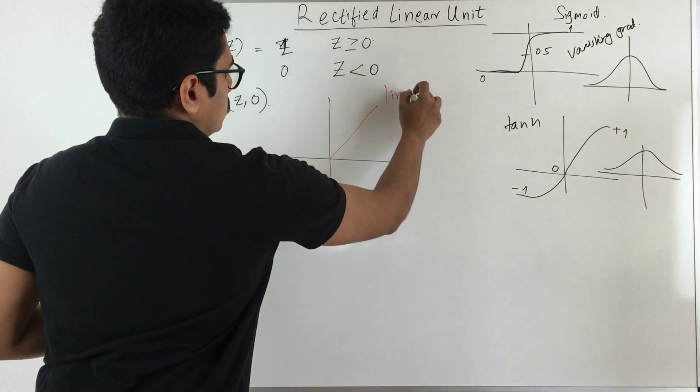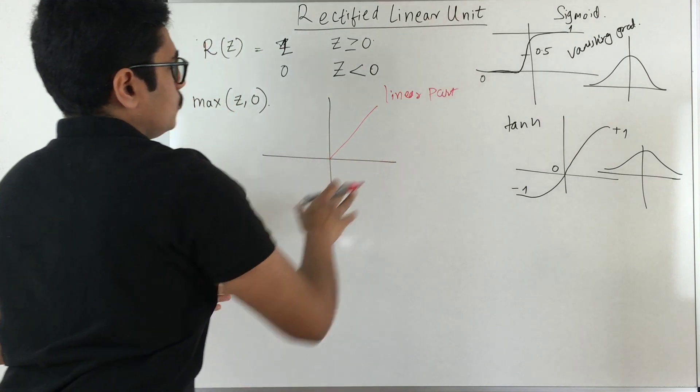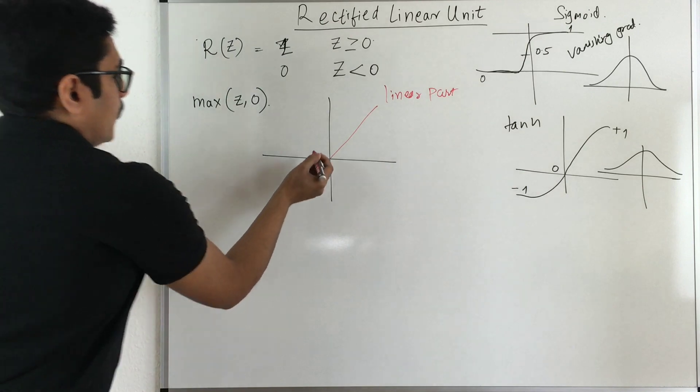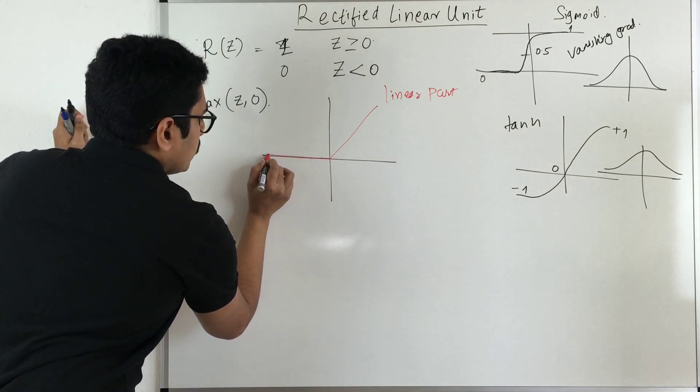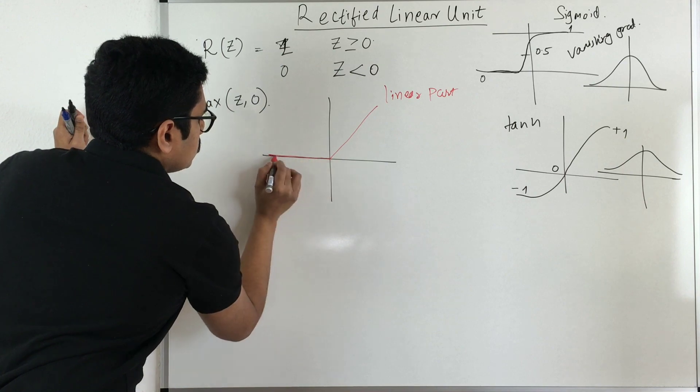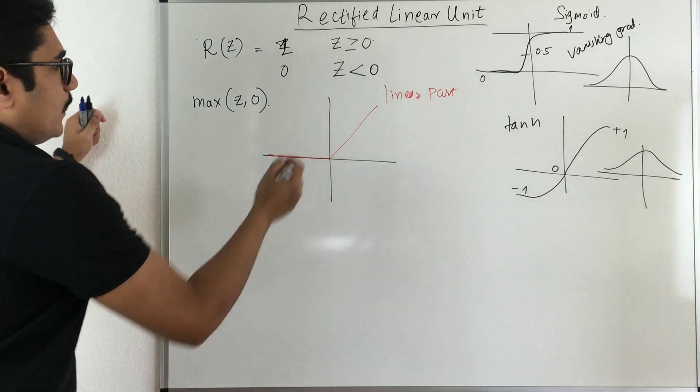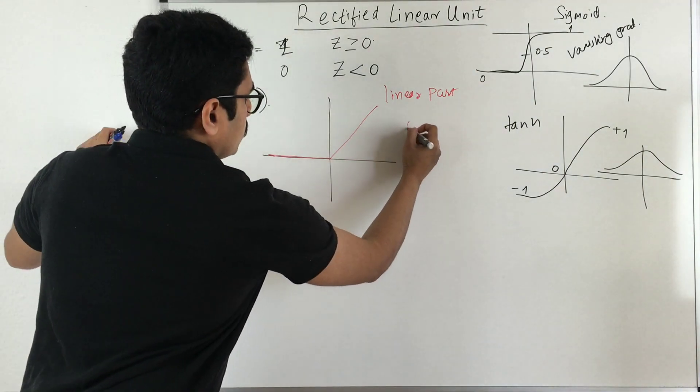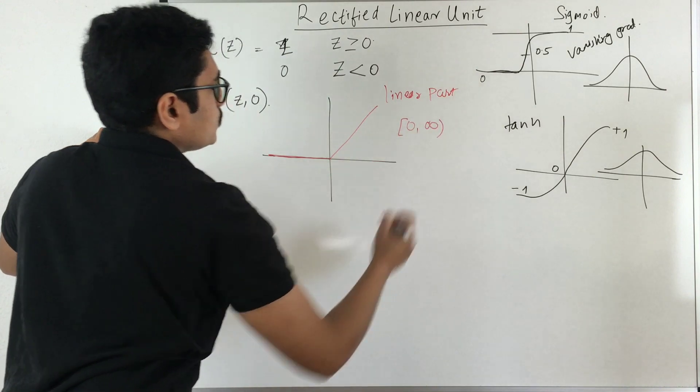So this part that is on the RHS side we can see that this has been realized as a linear regression problem. So this is the linear part, so that's where the linear unit comes into picture. And then at this portion that is on the left hand side you can see that it is constant so it attains 0.